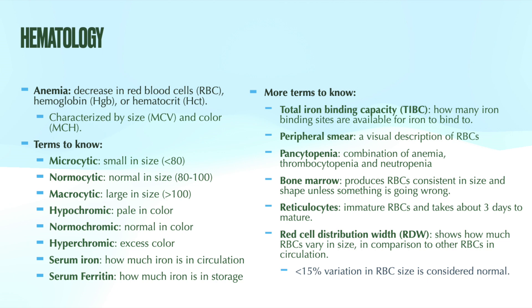The MCH stands for mean corpuscular hemoglobin and defines the color or amount of hemoglobin per red blood cell. It helps to remember the word 'hue' for color. Additional terms useful for practice and boards: microcytic means small in cell size, normocytic is normal cell size, macrocytic is large in size. Hypochromic means low pigment, normochromic is normal pigment, and hyperchromic refers to excess pigment.